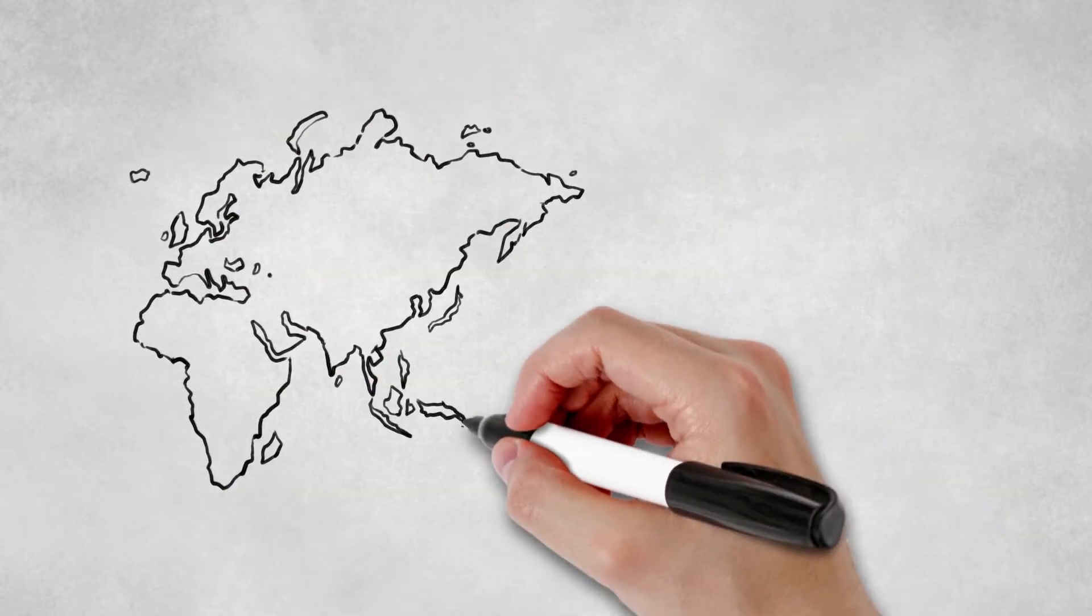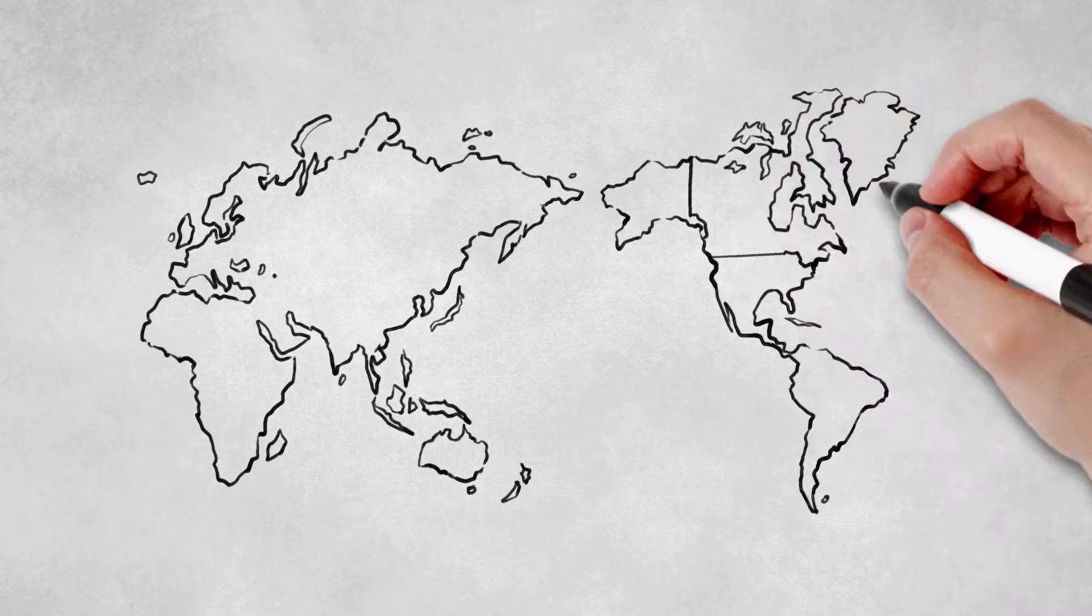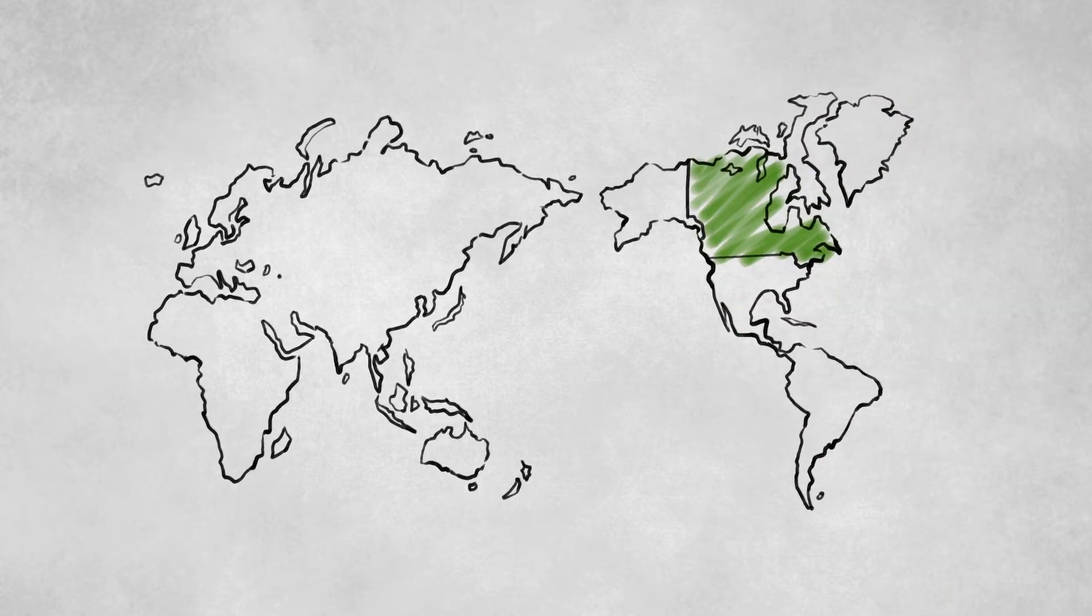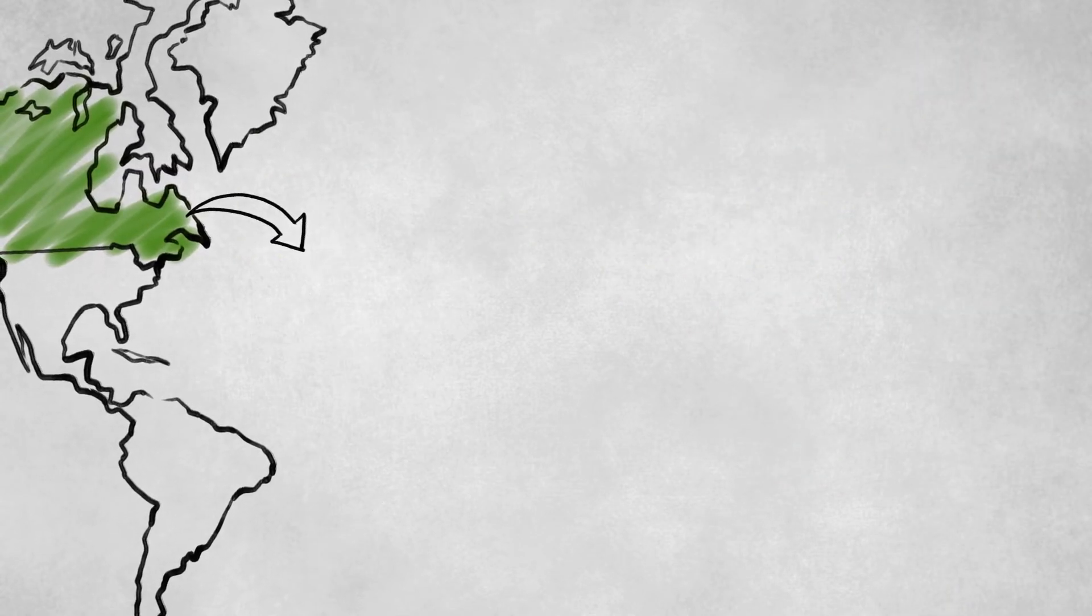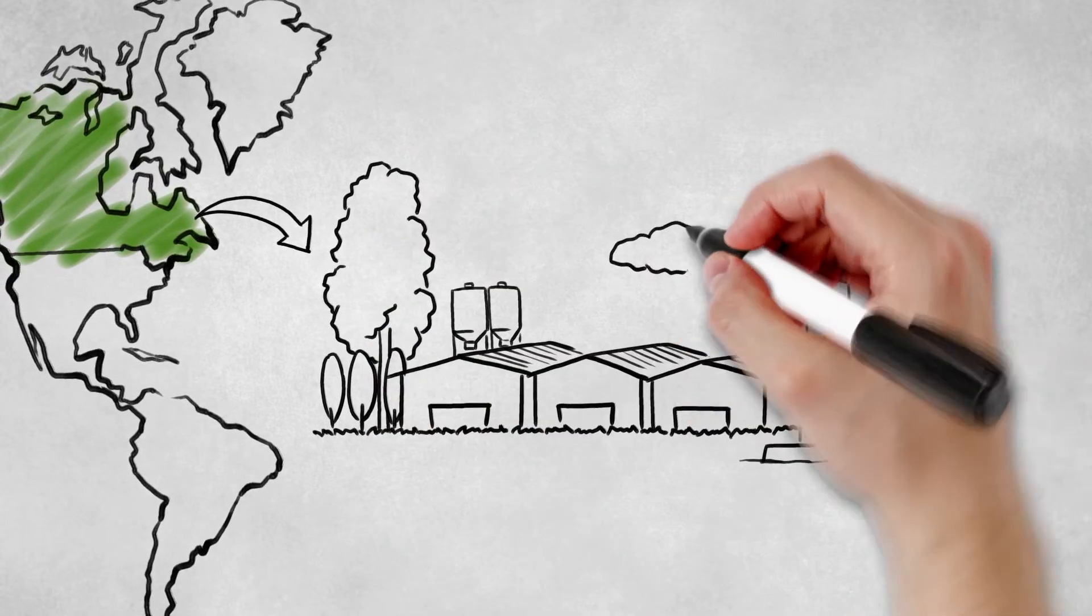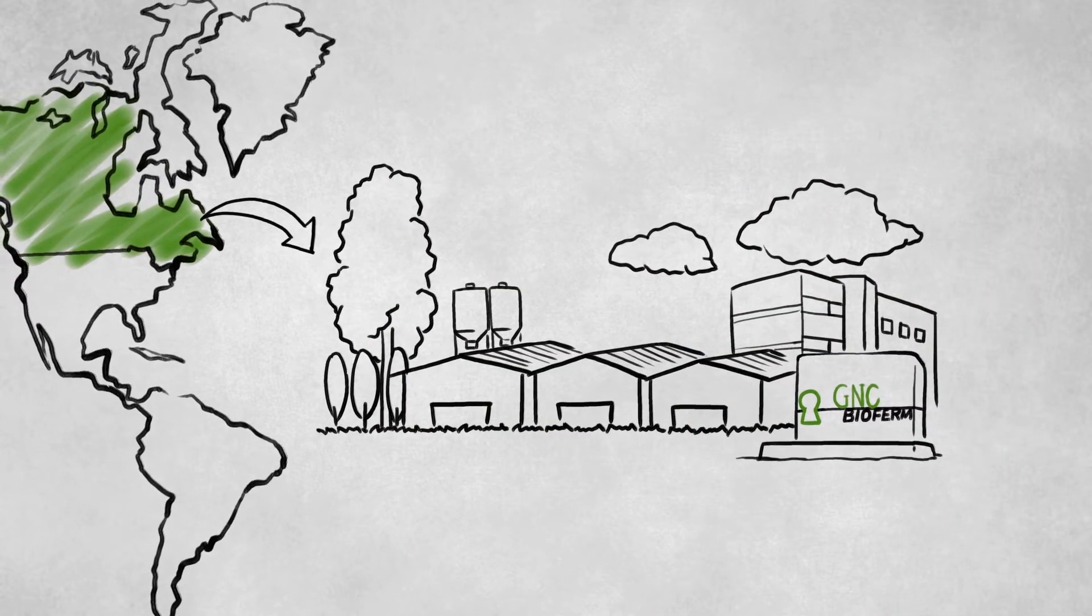EndoPower is a unique enzyme feed additive targeting corn-soy based diet. This product is developed and manufactured by GNC BioFirm in Canada, which is a subsidiary of EasyBio.